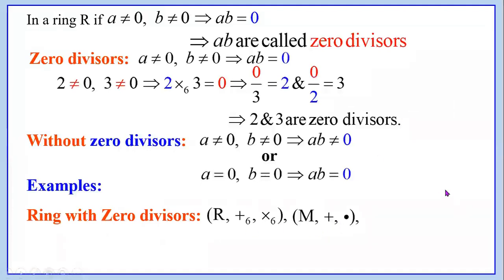The first example is the ring with elements 0, 1, 2, 3, 4, 5 with respect to addition modulo 6 and multiplication modulo 6. The second example is M with addition and multiplication, where M is the set of matrices of order 2×2 or N×N. The reason is that matrix multiplication is not commutative in general. Therefore, whenever you want an example of a ring with zero divisors, we can take this example.